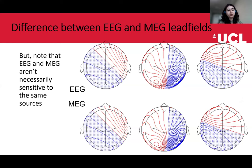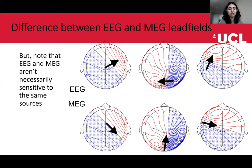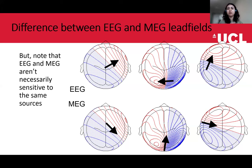Regarding the difference between EEG and MEG: dipoles will create different lead fields for each modality. Based on the difference between electric and magnetic fields, the dipoles will be orthogonal to each other. So the same lead field observed in EEG and MEG will lead us to infer different orientations of the dipoles. However, I want to mention a caveat: this doesn't necessarily mean that if you see a lead field in EEG or MEG you can infer what the exact same lead field would look like in the other modality, because EEG and MEG are not actually sensitive to exactly the same types of sources. There will be some differences when measuring the same activity with EEG versus MEG.